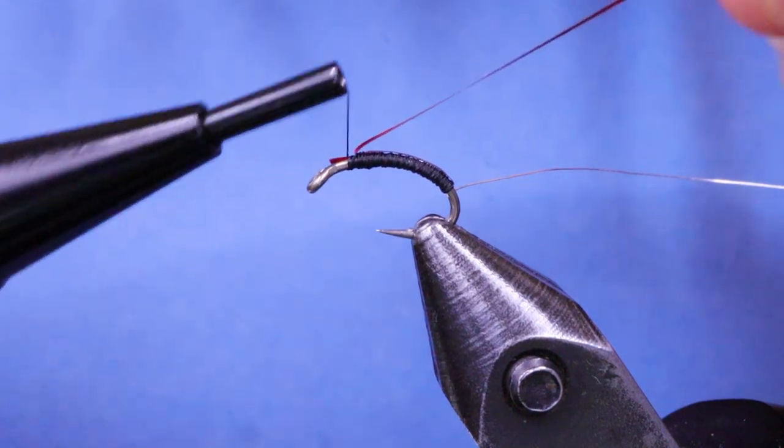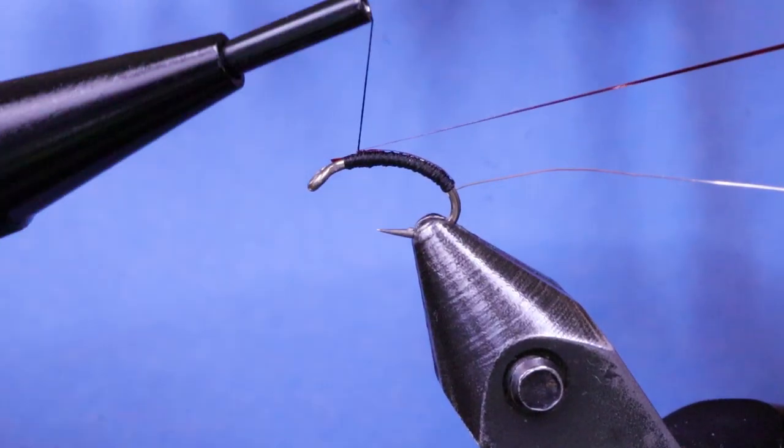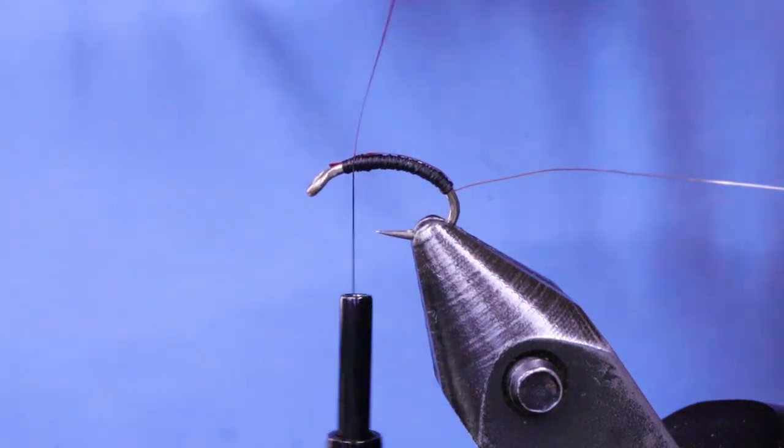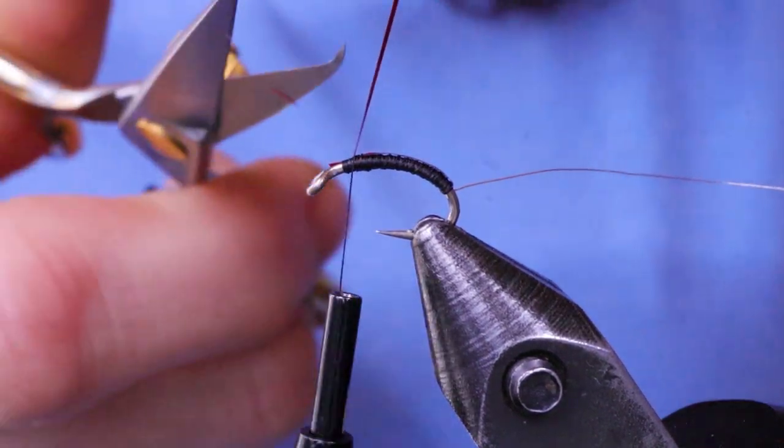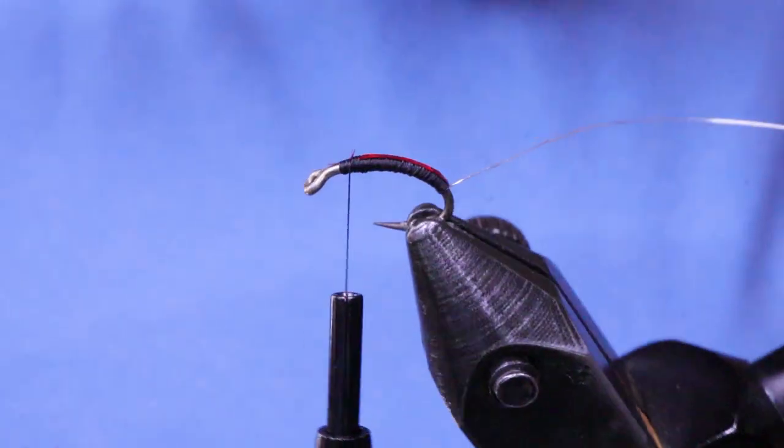So I'm going to do three wraps and lock it in there. And then next just take your thread in front, do a couple of wraps over it. Hold it good and strong. Snip that away. So you can see it's just running up the back there.